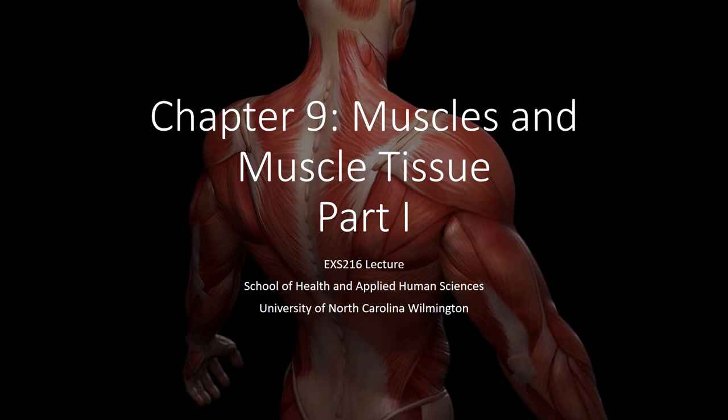Welcome to chapter nine, muscles and muscle tissue. Chapter nine has been divided up into three parts. With part one, we will do a brief review of muscle tissue. We did cover muscle tissue in unit one. From there, we will talk about the characteristics of all types of muscle tissue, and then we will shift our focus to skeletal muscle — both the gross anatomy and the micro anatomy all the way down to the muscle cell.